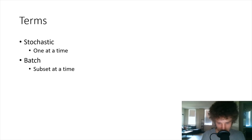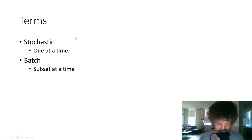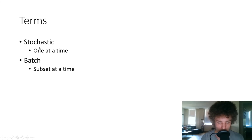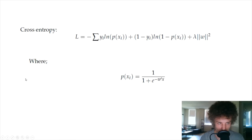Two common terms in gradient descent training: stochastic gradient descent updates weights after every single sample, checking the loss for each sample. Batch gradient descent updates after a batch of samples, or even the entire dataset. Each approach has benefits and drawbacks in terms of speed and accuracy.